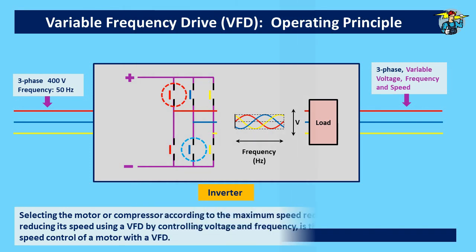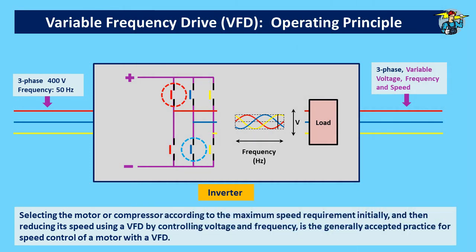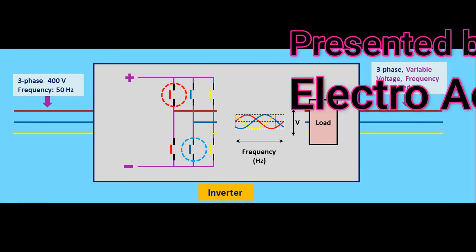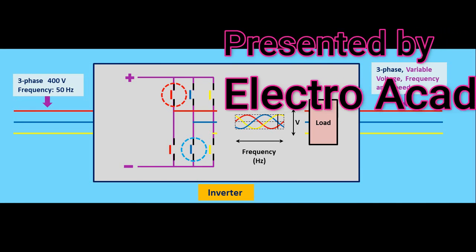Selecting the motor or compressor according to the maximum speed requirement initially, and then reducing its speed using a VFD by controlling voltage and frequency, is the generally accepted practice for speed control of a motor with a VFD. Hope you got a fair idea on how a VFD works now. If this video is helpful, please subscribe to the channel. Thank you.